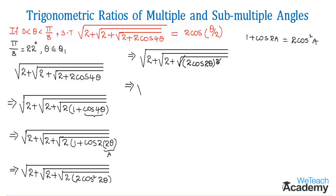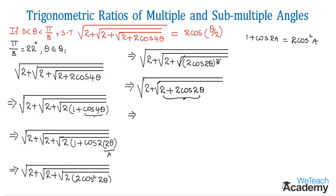That simplifies to √(2 + √(2 + 2cos2θ)). Again taking 2 as the common factor we get √(2 + √(2(1 + cos2θ))). This is again in the form of 1 + cos2a, now assuming θ as 'a', which gives 2cos²a.